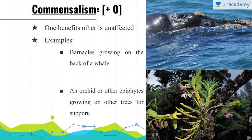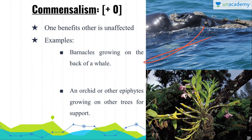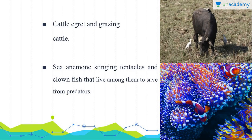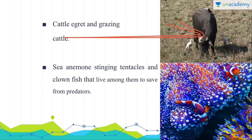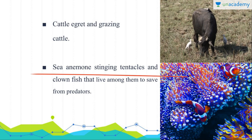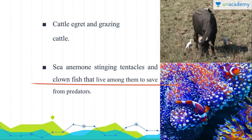In commensalism, one species gets benefited and the other is unaffected. For example, barnacles growing on the back of a whale — the whale is not affected, but the barnacles benefit. Another example is epiphytes or orchids growing on another tree for support. The cattle egret eats bacteria or insects stirred up by buffalo, while the buffalo is not affected positively or negatively. The clownfish hides among the stinging tentacles of sea anemones to save itself from predators.